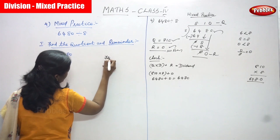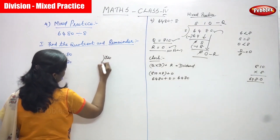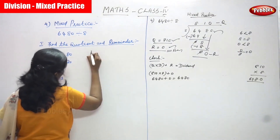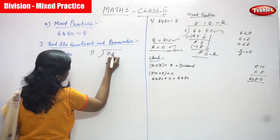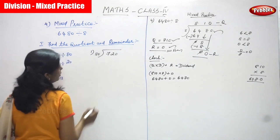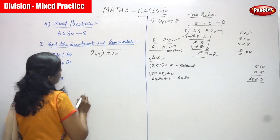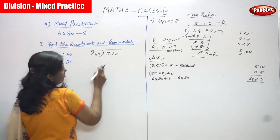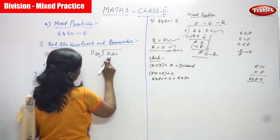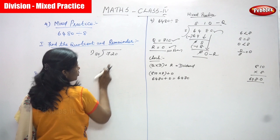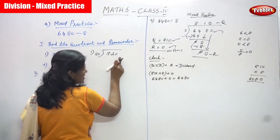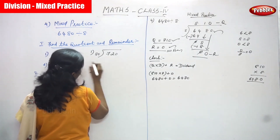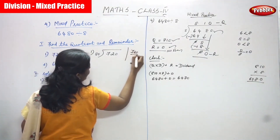Now that is 720 is divided by 80. 720 divided by 80. So this is a three-digit number and this is a two-digit number. The dividend is a three-digit number and the divisor is a two-digit number. You have to divide 720 by 80.